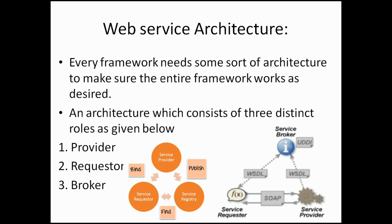The web service architecture flow: the service provider sends a WSDL file to UDDI. The service requester contacts UDDI to find out who is the provider for the data it needs. Then it contacts the service provider using SOAP protocol. The service provider validates the service request and sends structured data in XML format.